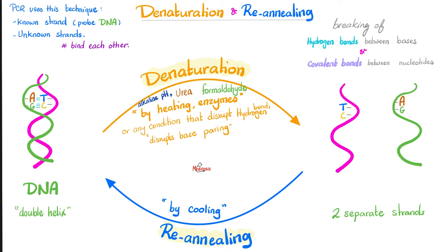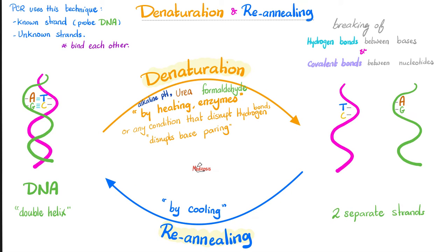Denaturation is splitting the double helix into two separate strands, which you can do by heating. But if you cool the DNA, it will rejoin — i.e., re-anneal — back to the double helix. It's the tale of two opposites: heating versus cooling, denaturation versus re-annealing.